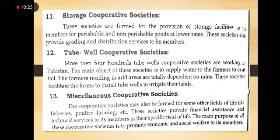The twelfth point is the tube well cooperative society. In the agriculture sector, people need access to water for irrigation. Those who want to use tube wells and irrigation systems can form this society, allowing members to collectively access irrigation facilities that they cannot afford individually.